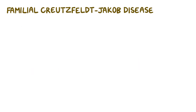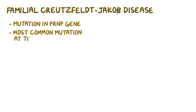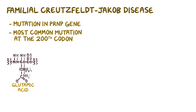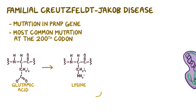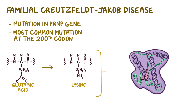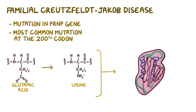Familial Creutzfeldt-Jakob disease happens when there is a mutation in the PRNP gene. The most common mutation happens at the 200th codon and causes the amino acid glutamic acid to be replaced by lysine, and that's enough to make the entire protein misfold.